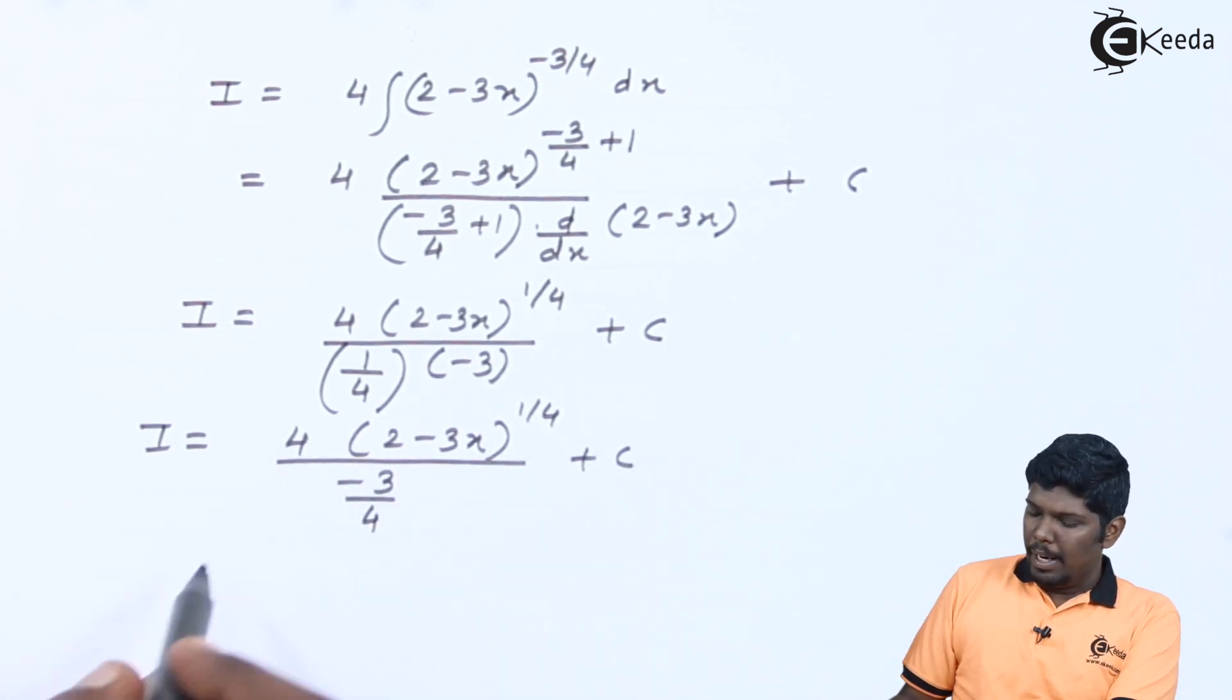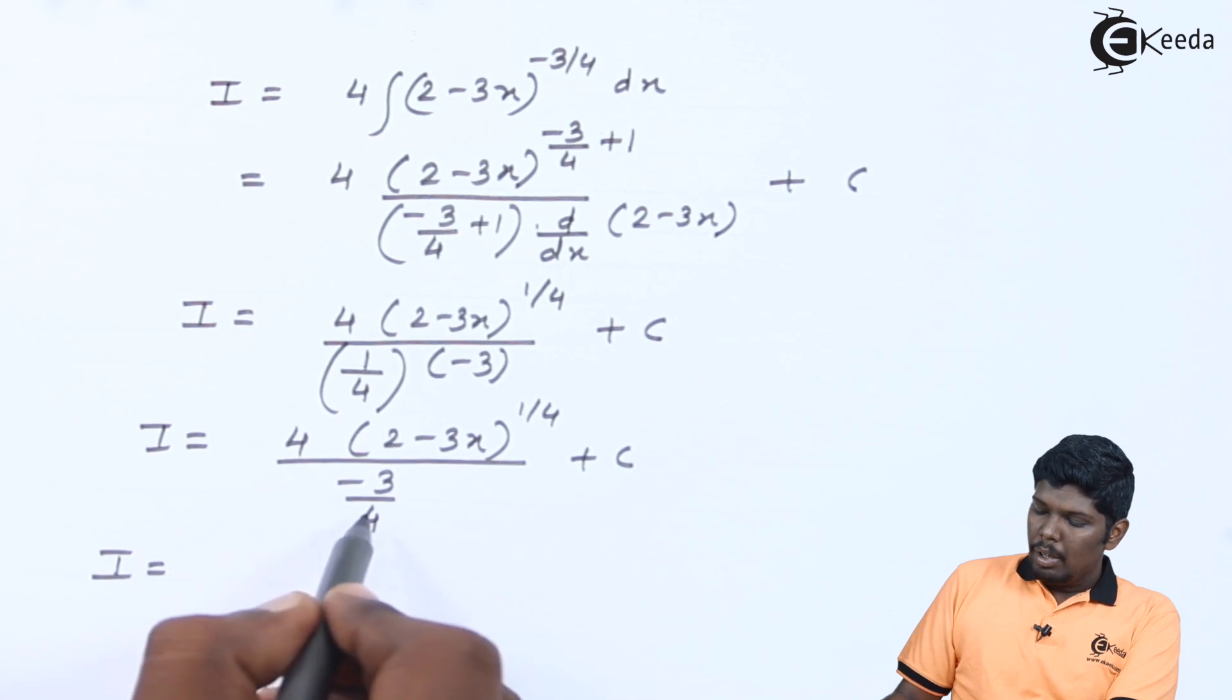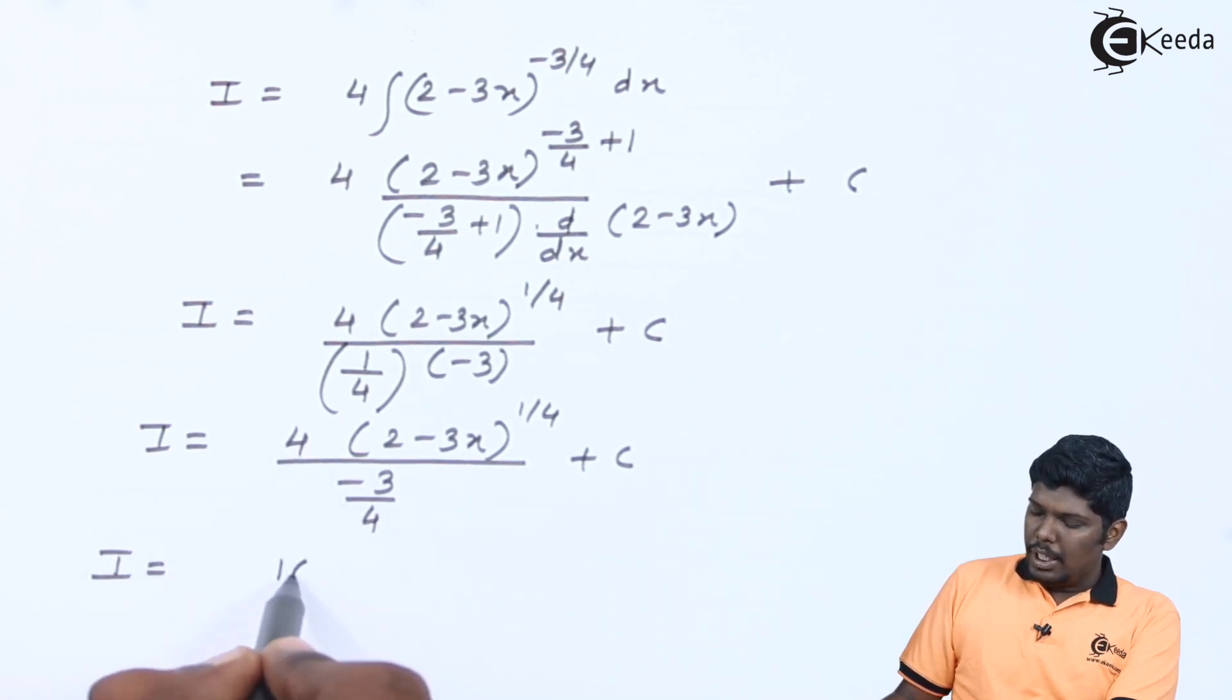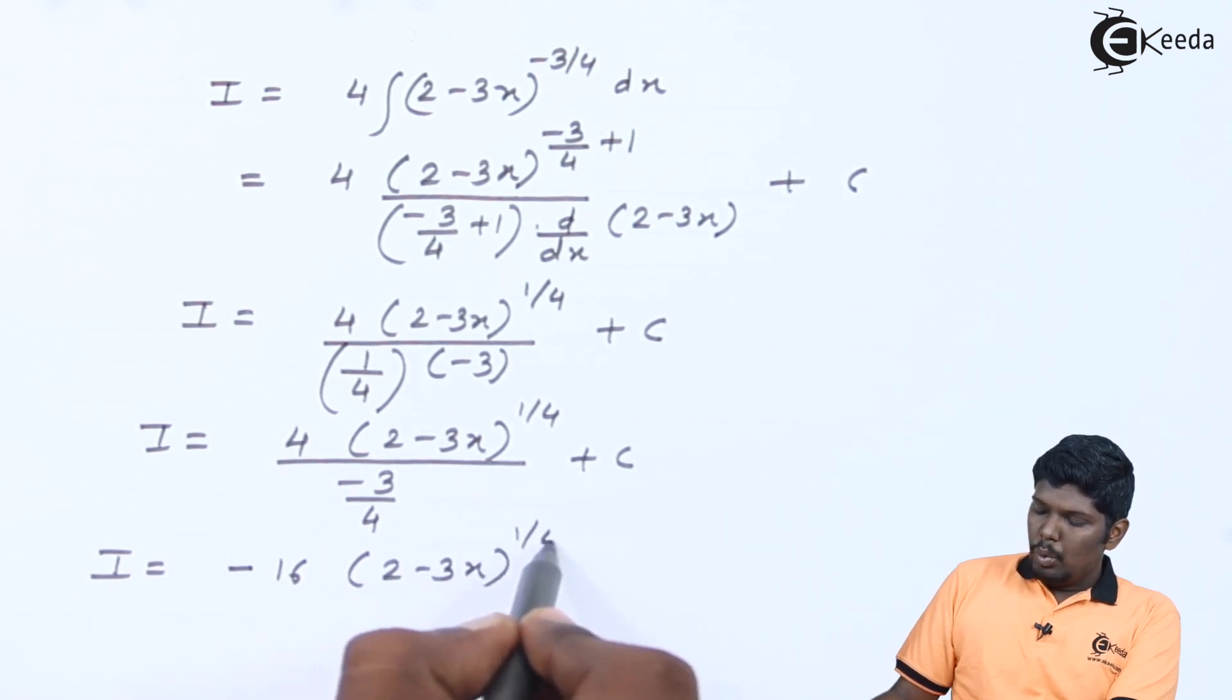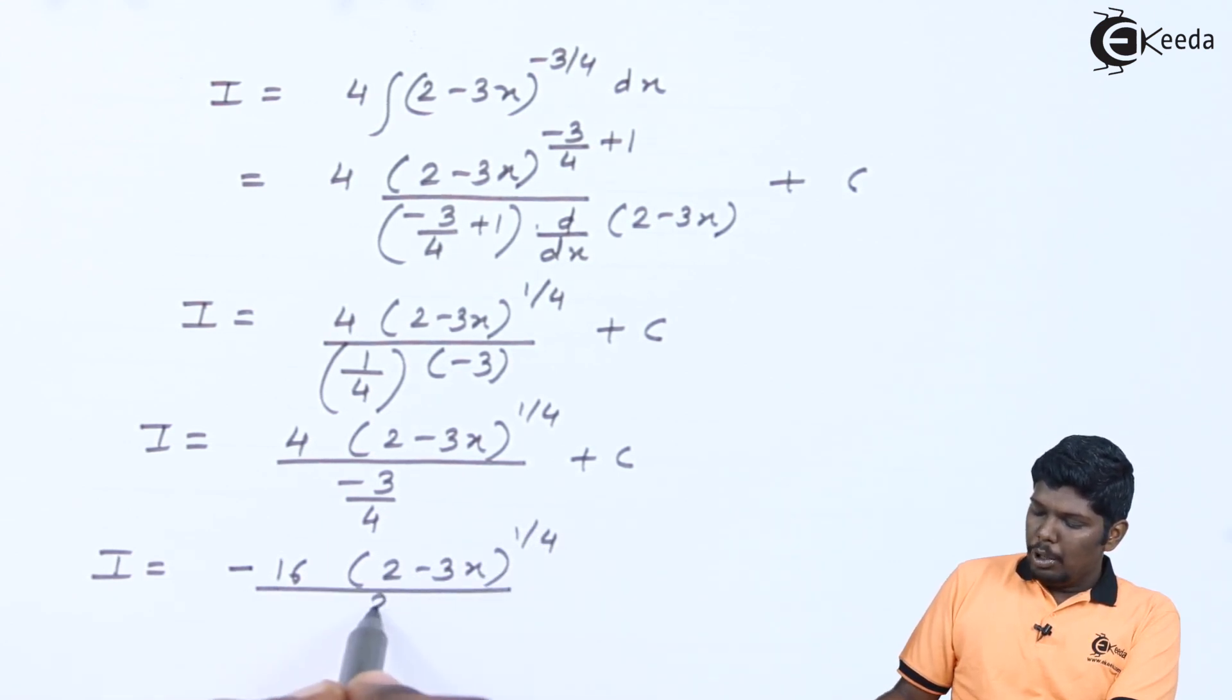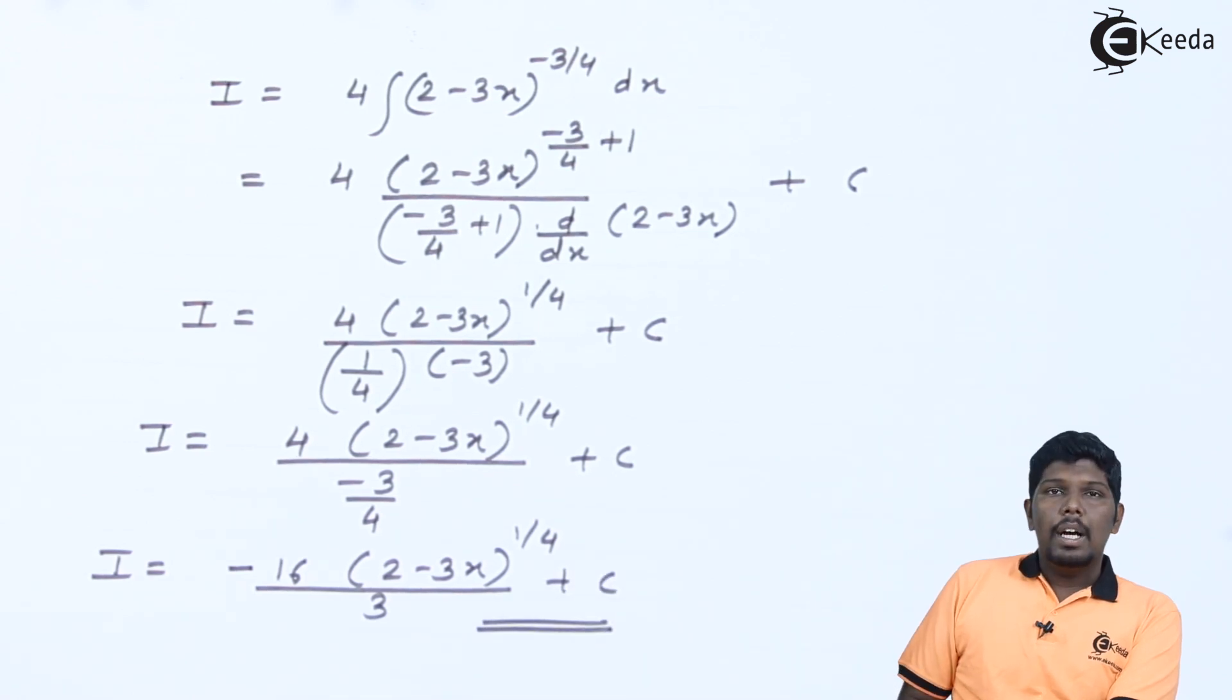Its reciprocal will be multiplied and I will be 4×4 will give you 16, followed by minus sign, in the numerator (2-3x) raised to 1/4 upon 3 +C. This becomes the integration of the given function.